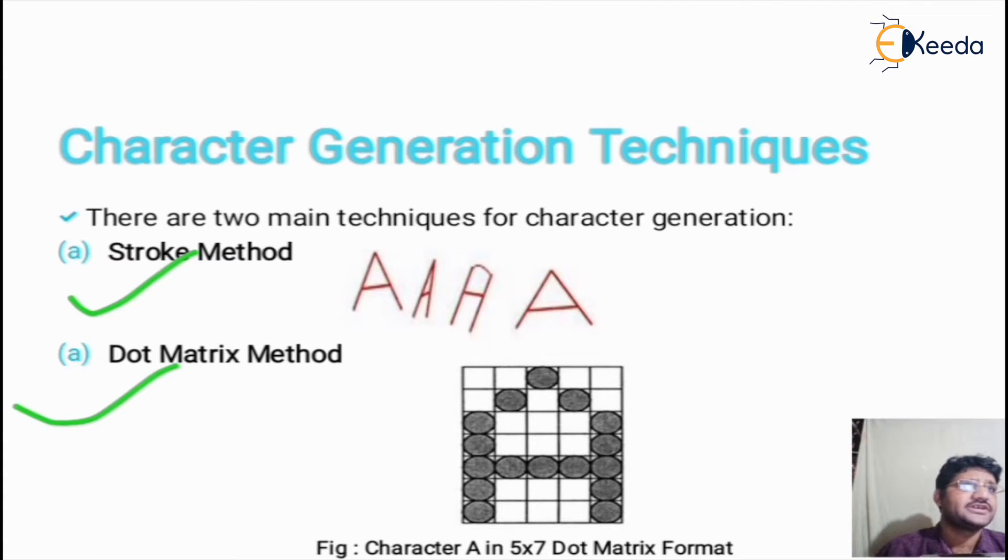In stroke method, we use a sequence of line drawing functions and arc functions to generate characters. We can generate a sequence of characters by assigning starting and end points of line or arc. Various phases of characters can be generated by changing their values or parameters in line and arc functions.